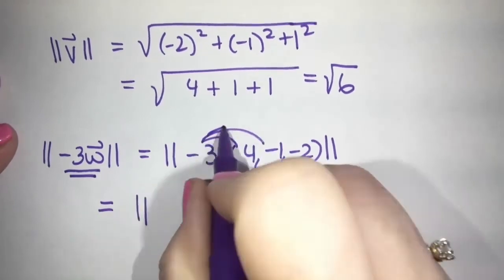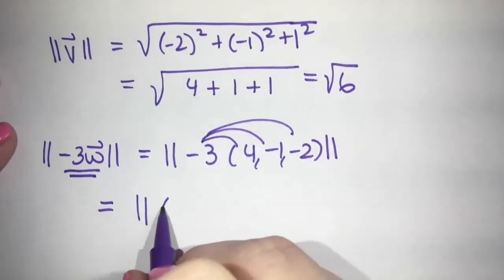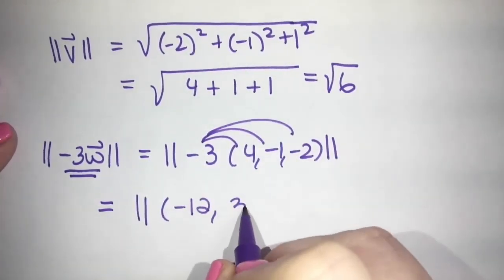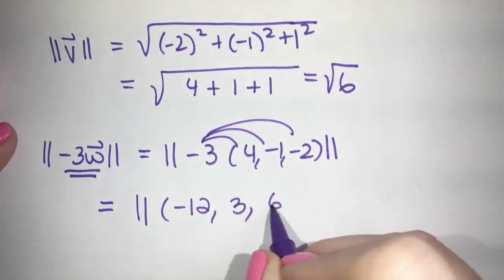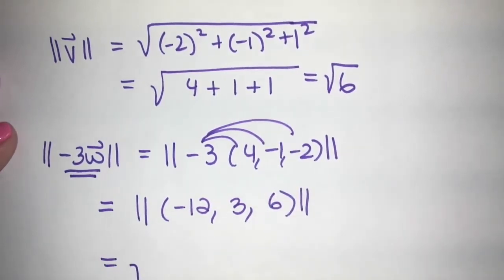So this would be the magnitude. We're multiplying the negative three by each component. So we get negative 12, three, and six. And then we do the magnitude. So square root, square negative 12, plus square the three, plus square the six.